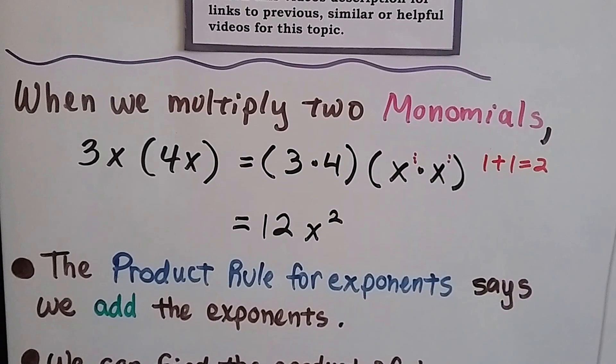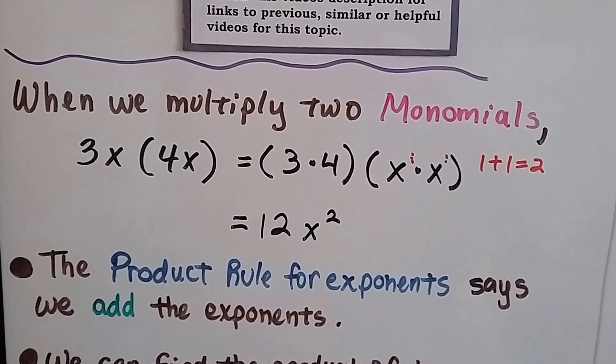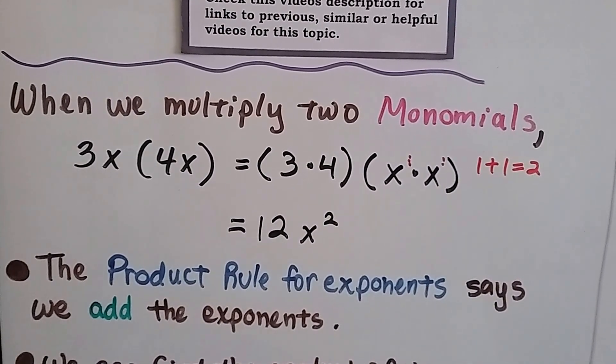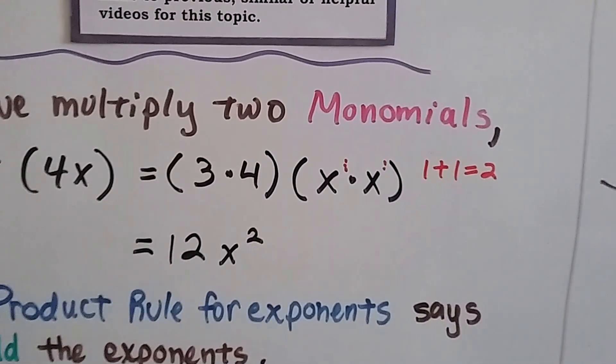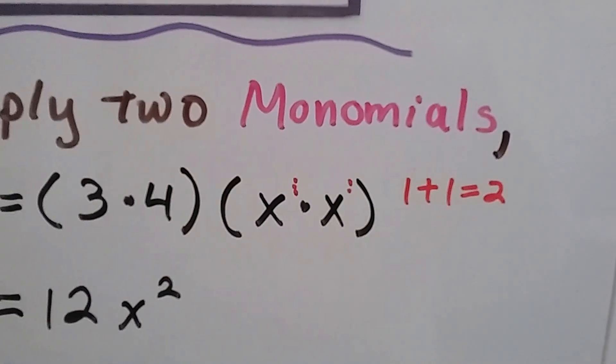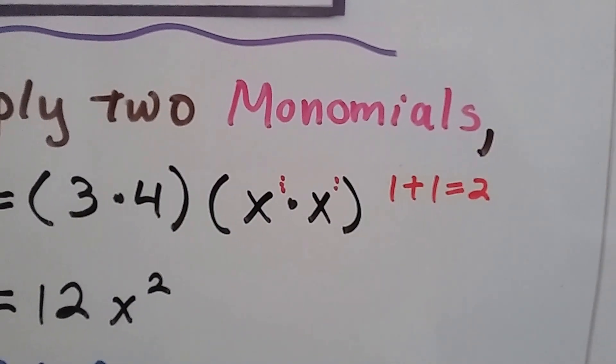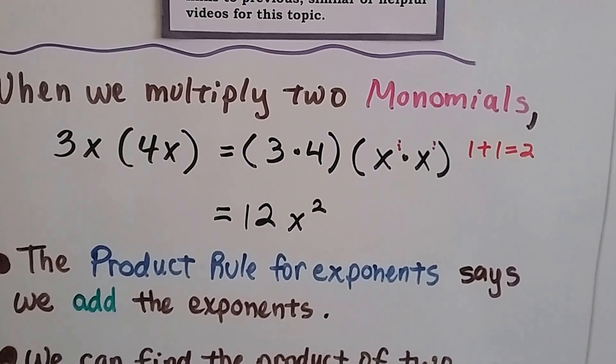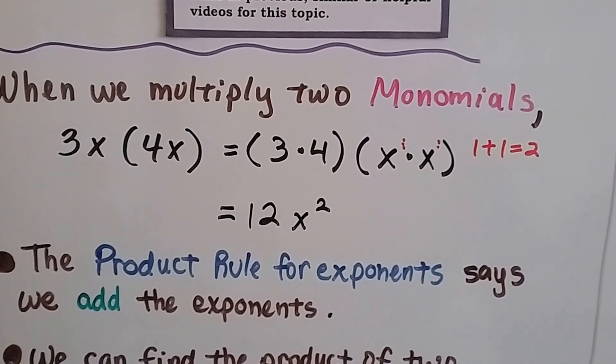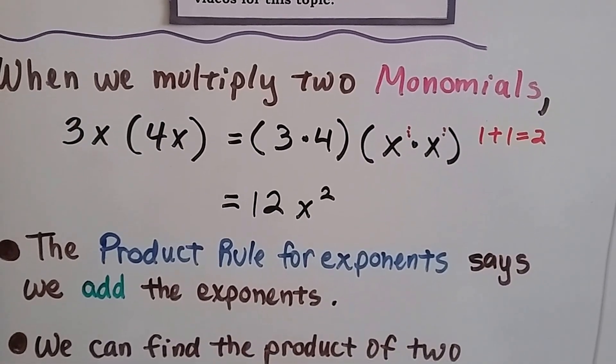When we multiply two binomials, 3x times 4x, it's going to equal 3 times 4 times x times x. And each of those x's have a little invisible one exponent. We add them together to get a 2. So we have 12x squared. The product rule for exponents says we add the exponents.